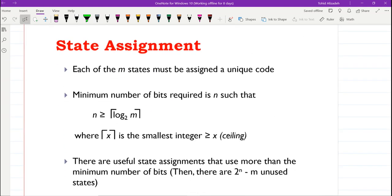Once we have the state diagram, we need to go through the state assignment. In the state assignment, depending on the number of states, we need to determine the number of the state variables. If we assume that we have a number of states, each one of them will receive a unique code.